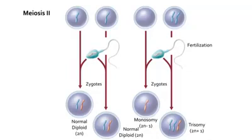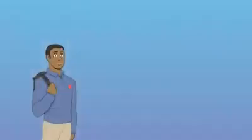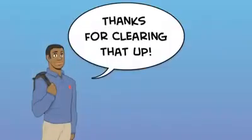In this scenario, there is a 50% chance of a normal diploid, a 25% chance of a monosomy, and a 25% chance of a trisomy.